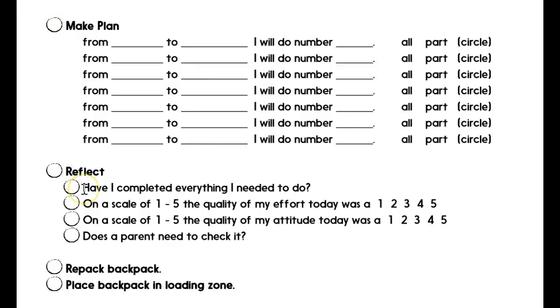Then the next piece is that they reflect. This also, just like unpacking the backpack, consists of four things. First, they ask themselves have I completed everything that I need to do? And if the answer is no, then they need to come to the parent and say I didn't get everything done so that the parent can help them figure out how to carve out time. Next, they evaluate in a little self-reflection. On a scale of one to five, the quality of my effort today was, and they give themselves a grade.